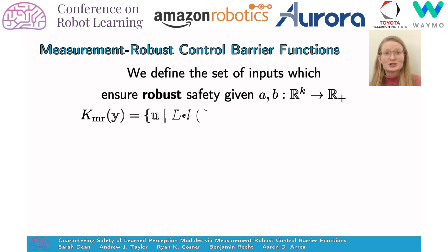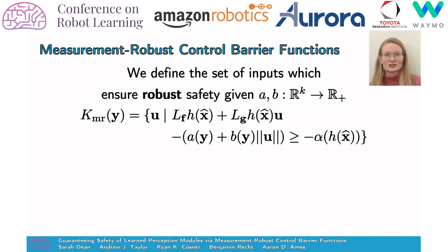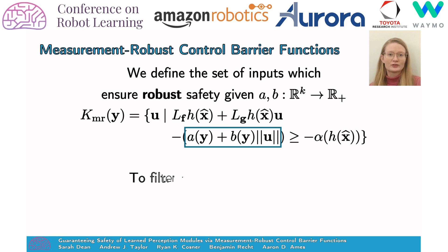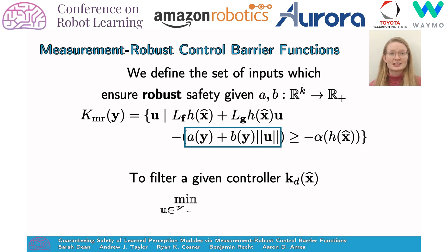We propose measurement-robust control barrier functions, which are defined as follows, where A and B are non-negative functions of the observation. Compared with the standard barrier condition, there is an additional negative term on the left-hand side which grows large for large inputs. This term captures the uncertainty in how the system will evolve. This set of robustly safe inputs can be used to modify any nominal controller using the following optimization problem.